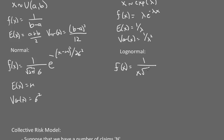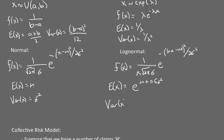For the log-normal, f(x) = (1 / (x·sqrt(2π)·sigma)) · e^(−(ln(x)−mu)² / (2·sigma²)). The expected value of x is e^(mu + 0.5·sigma²), and the variance is (e^(sigma²) − 1) multiplied by the expected value of x squared.